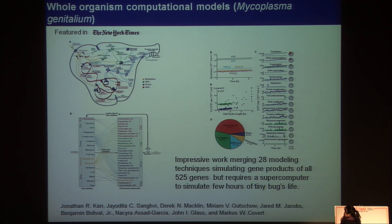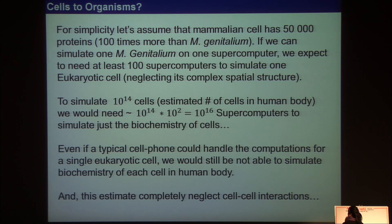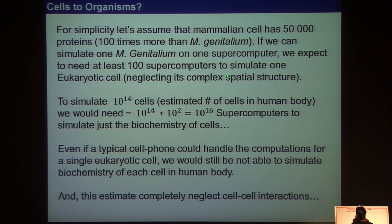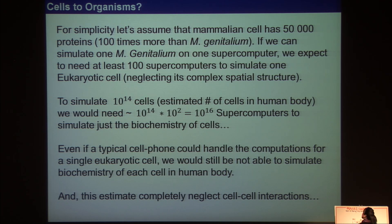So I'm asking myself: how would we go from a single cell to an organism? If we were to use particle-based or Monte Carlo-based simulations, I did a simple back-of-the-envelope calculation. Assume a mammalian cell has 50,000 proteins — that's 100 times more than Mycoplasma. If it took one supercomputer to simulate Mycoplasma genitalium's life cycle — and I know that's wrong; I talked to Markus yesterday and it actually took 10 hours on a single processor. That claim came from the popular press, which is always wrong.